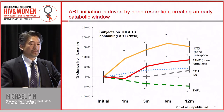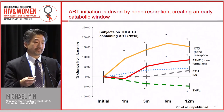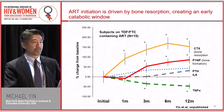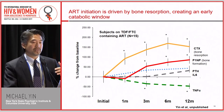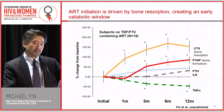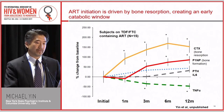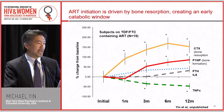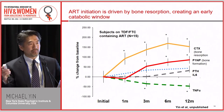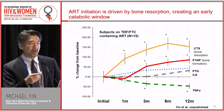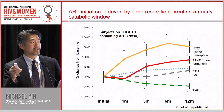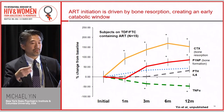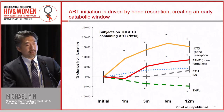Looking mechanistically at bone turnover markers with initiation of ART: first, you see an increase in a bone resorption marker at the one-to-three month window, peaking by six months. The bone formation marker takes a little while to start to compensate. This is all while inflammatory markers are going down as expected with ART. This suggests that ART has an effect on bone — the window of excess resorption followed by delayed compensation of bone formation may explain the acute bone loss in the first six to twelve months. Once bone formation reaches the same level as resorption, bone stabilizes.